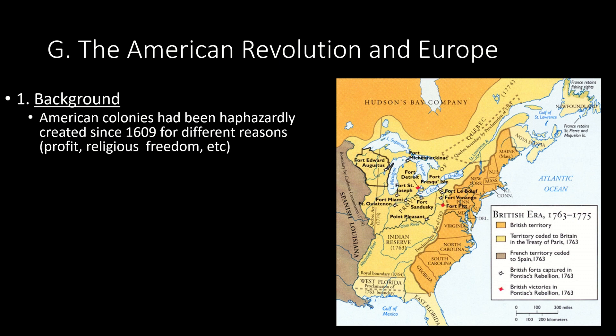Every colony was founded for a different reason and they were all kind of founded haphazardly — no real rhyme or reason. Jamestown, the first colony, was started by the Virginia Company, a joint stock company, and their goal was to find gold. They found starvation and death, and eventually learned that tobacco was worth a lot of money to Europeans. A little further north, the Puritans fleeing persecution came to practice religion freely. Some colonies were founded because kings owed money to people like William Penn and gave them land in America.